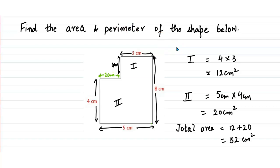Let's start from one point and start calculating the perimeter. If I start walking from this point, I first walk four centimeters, so I'm going to write four. Then I go this side and add another five. Then I go up.